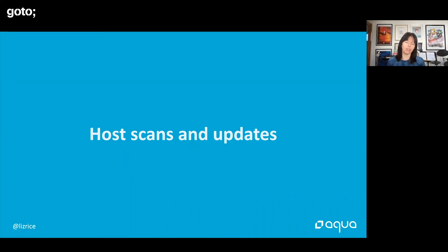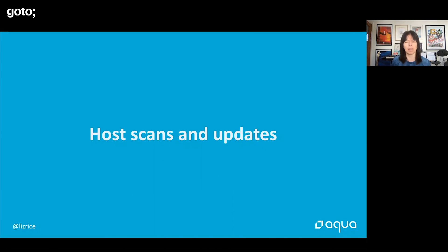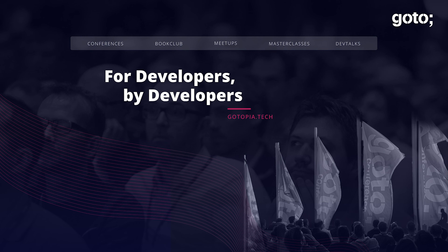The set of software you should be running on your hosts should be small — you're probably running Kubernetes, a container runtime, maybe some logging software. There's not much that you need to update on your host machines, so make sure you're doing it. If you saw the keynote just before this, 70 percent of people are still running on-prem rather than public cloud. If you're in the public cloud using a managed service, it will take care of updates for you — that's one of the advantages. But if you are managing your own software, whatever it is, keep it up to date. If you're not, you don't know what security issues you're running.